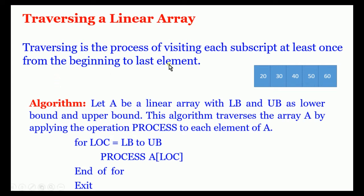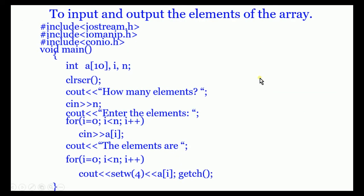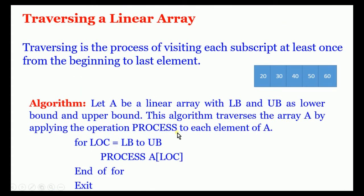That is called traversing a linear array — linear means sequential, one-by-one element array. The algorithm: let A be a linear array with lb (lower bound) and ub (upper bound). This algorithm traverses the array A by applying the operation 'process' to each element of A.